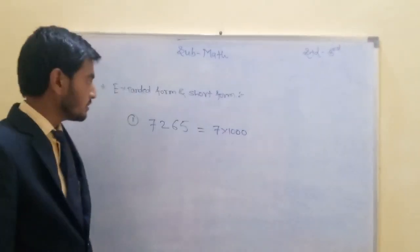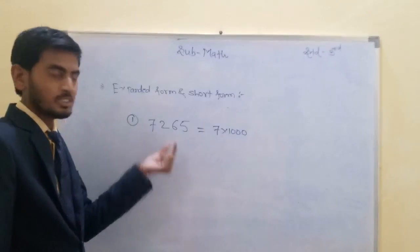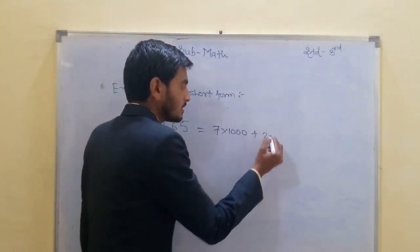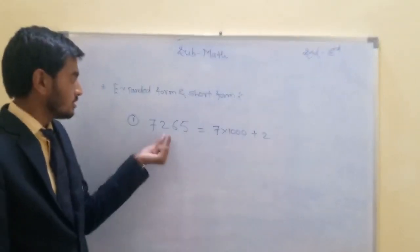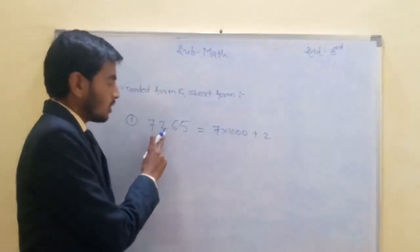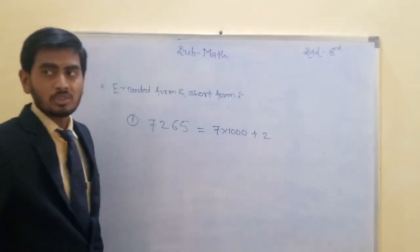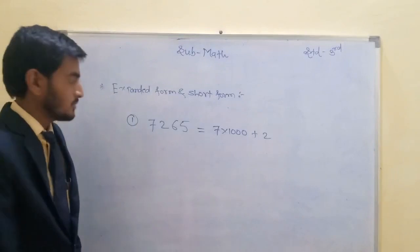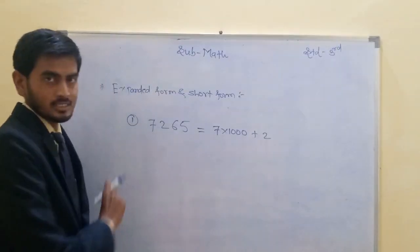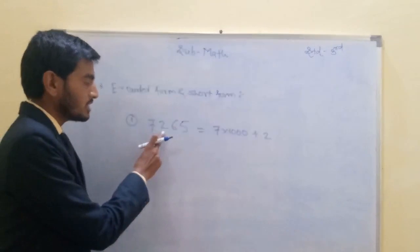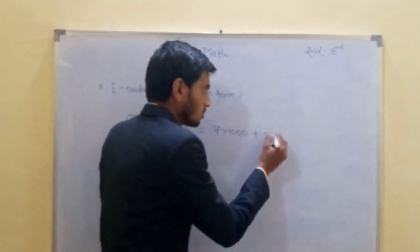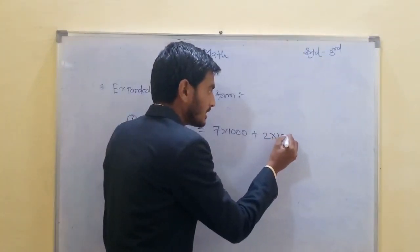Next digit is 2. On which place is 2 situated? 1, 10, 100. Means 2 is placed on the 100's place. 2 multiplied by 100.